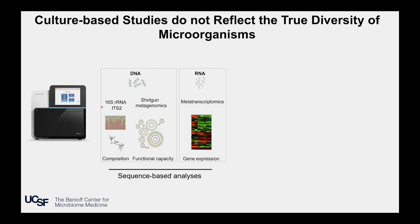We can also do this for fungi using regions like the interspacer region 2 (ITS2). This is a region of the fungal genome whose sequence allows us to classify which fungal species are present in a given sample. But this approach really just tells us the composition — which bacteria are present in a microbiome.